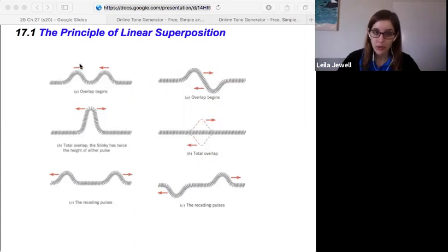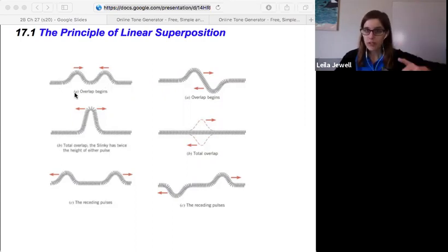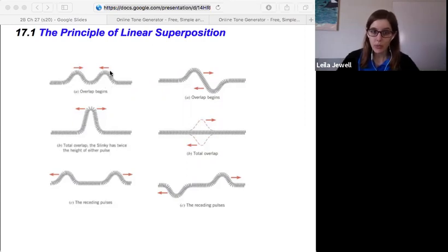They're moving in, moving in, and then at the very middle when they meet, they add together and they get twice as big for a brief instant. But they don't stop there, they each keep traveling on their merry way, so the wave just passes right through.